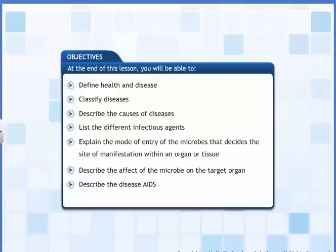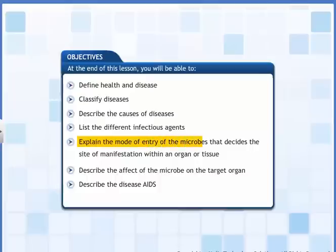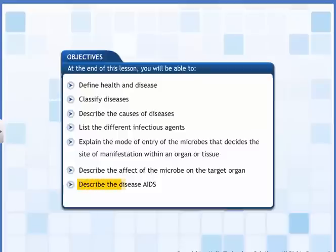By the end of this lesson, you will be able to: define health and disease, classify diseases, describe the causes of diseases, list the different infectious agents, explain the mode of entry of the microbes that decides the site of manifestation within an organ or tissue, describe the effect of the microbe on the target organ, and describe the disease AIDS.